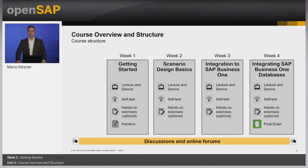This OpenSAP course is structured in four weeks: week one, getting started; week two, scenario design basics; week three, integrating to SAP Business One; and week four, integrating SAP Business One companies. Each week consists of lecture and demos, self-tests to test your knowledge after every unit, and optional hands-on exercises. At the end there will be a final exam, and discussions and online forums throughout the whole course.